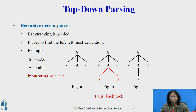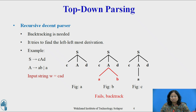For example, S derives cAd, A derives ab or a, and the input string W equals cad. To construct a parse tree for this string top-down, we initially create a tree consisting of a single node labeled S. An input pointer points to c, the first symbol of W. We use the first production for S to expand the tree and obtain the tree of figure A. The leftmost leaf labeled c matches the first symbol of W, so we advance the input pointer to a, the second symbol of W.